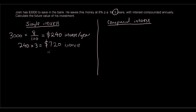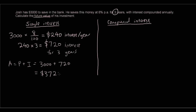So that's interest for 3 years, and the future value of his investment — the final amount he will receive at the end — is the principal plus the interest. So that's $3,000 plus $720, which is $3,720. Simple interest is when every year the interest is calculated from the original principal. For 3 years this person has earned $720, giving a total of $3,720.